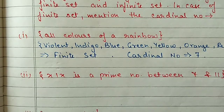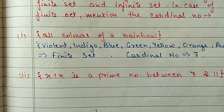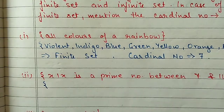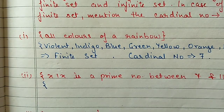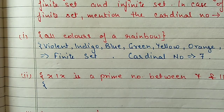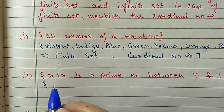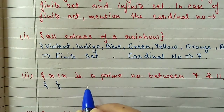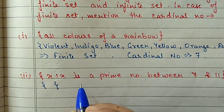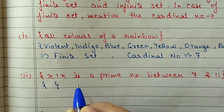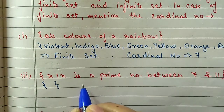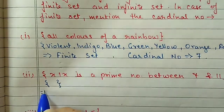Part (ii): {x such that x is a prime number between 7 and 11}. We check after 7: 8 is not prime, 9 is not prime, and 10 is not prime. So there are no prime numbers between 7 and 11, which means this is an empty set. For an empty set, the cardinal number is 0, so no need to write it separately - only for finite sets do we write the cardinal number.